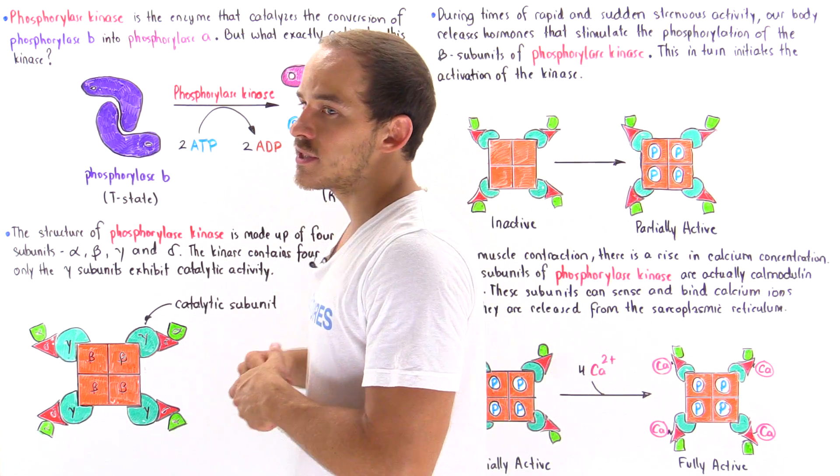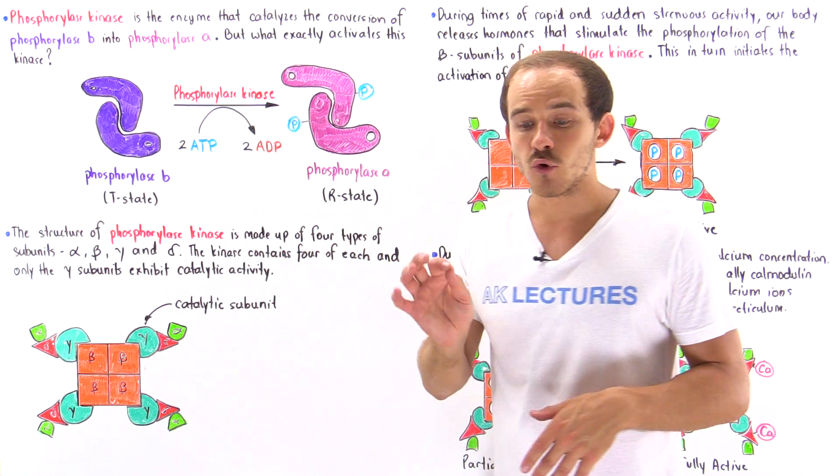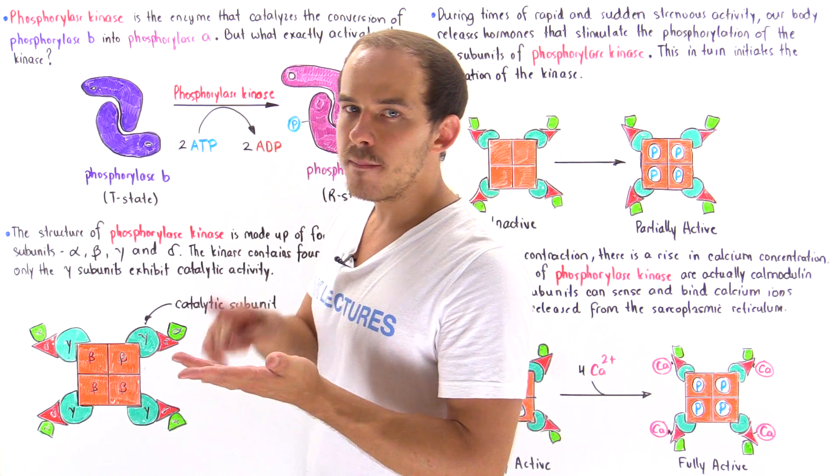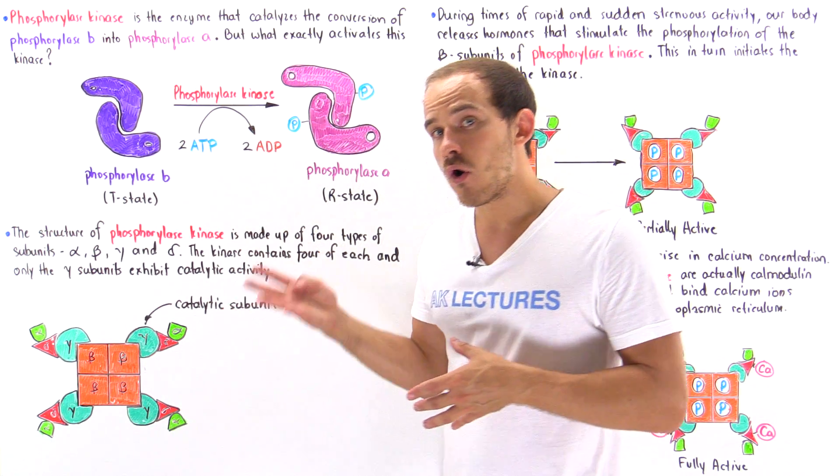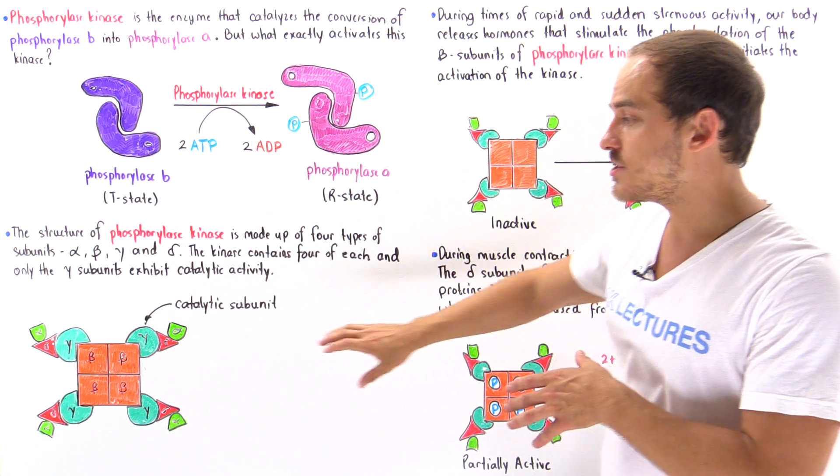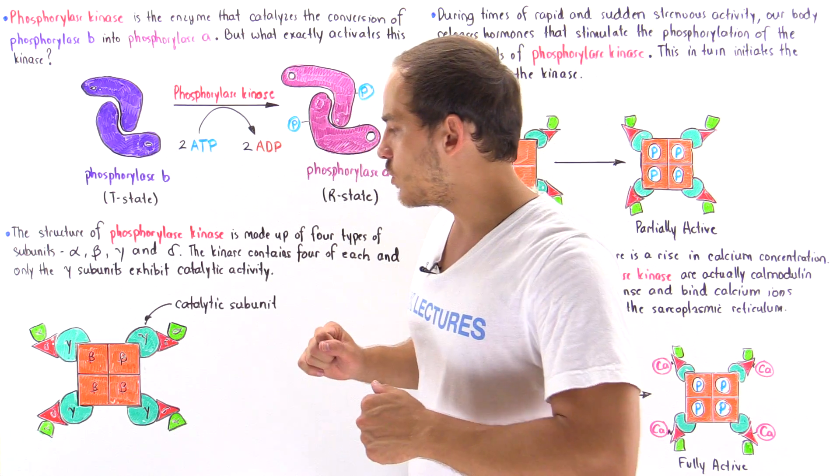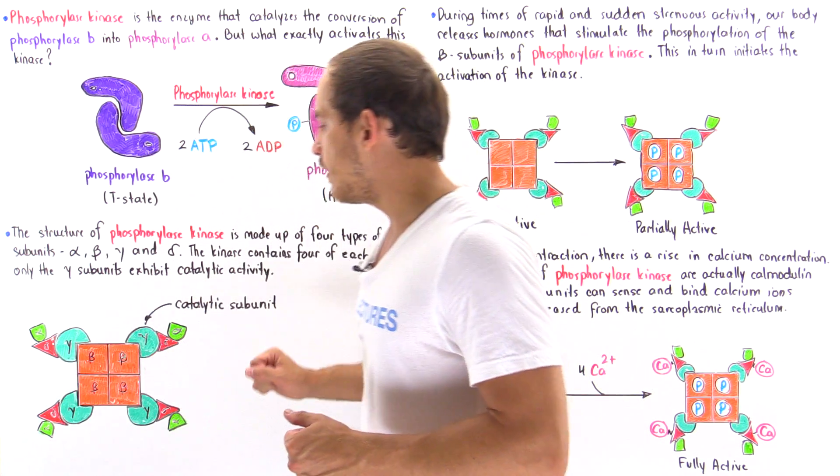The structure of this kinase actually consists of four different types of subunits, four different types of polypeptide chains. We have the alpha, the beta, the gamma, and the delta, and we actually have four of each type. So this is what the structure looks like. We have four beta shown in orange, we have these four gamma, the four delta, and the four alpha.